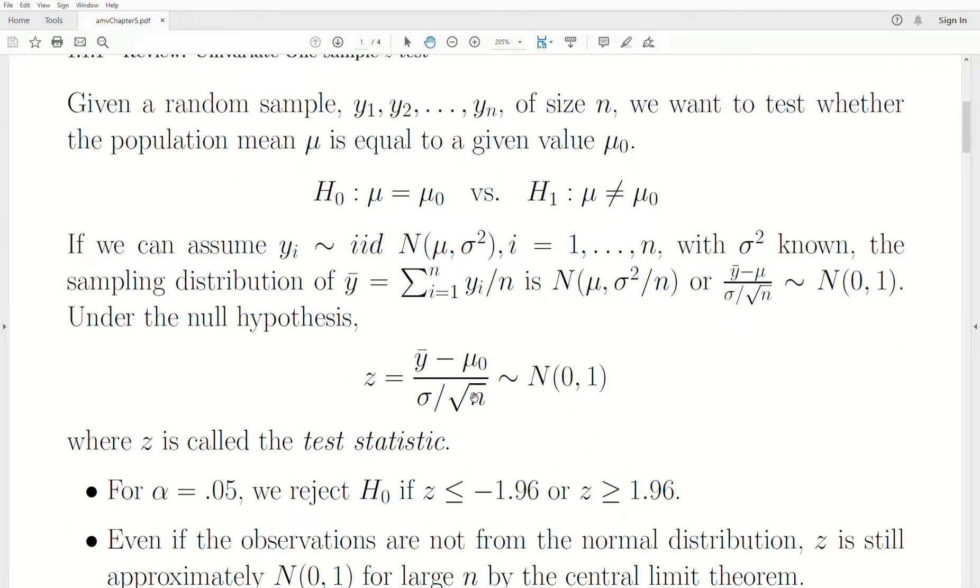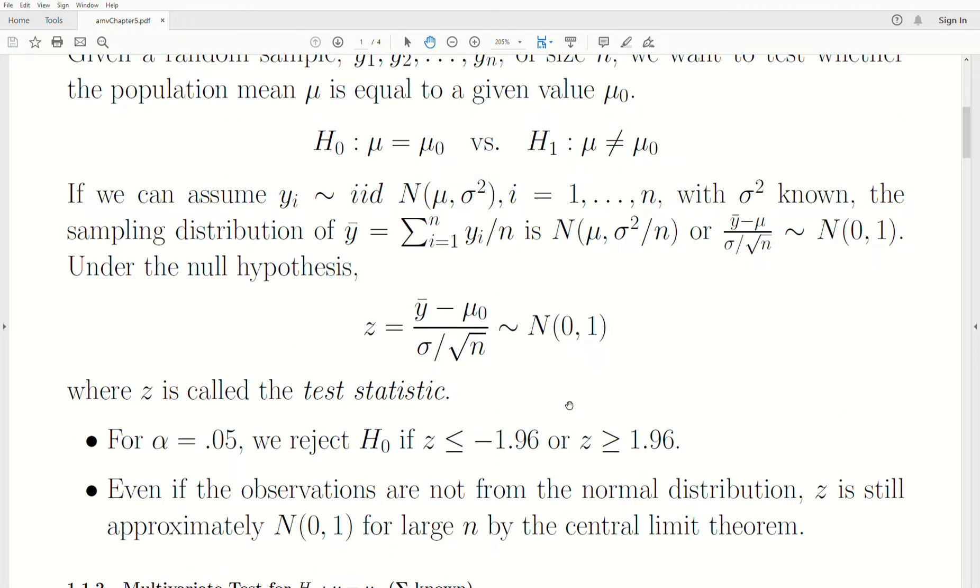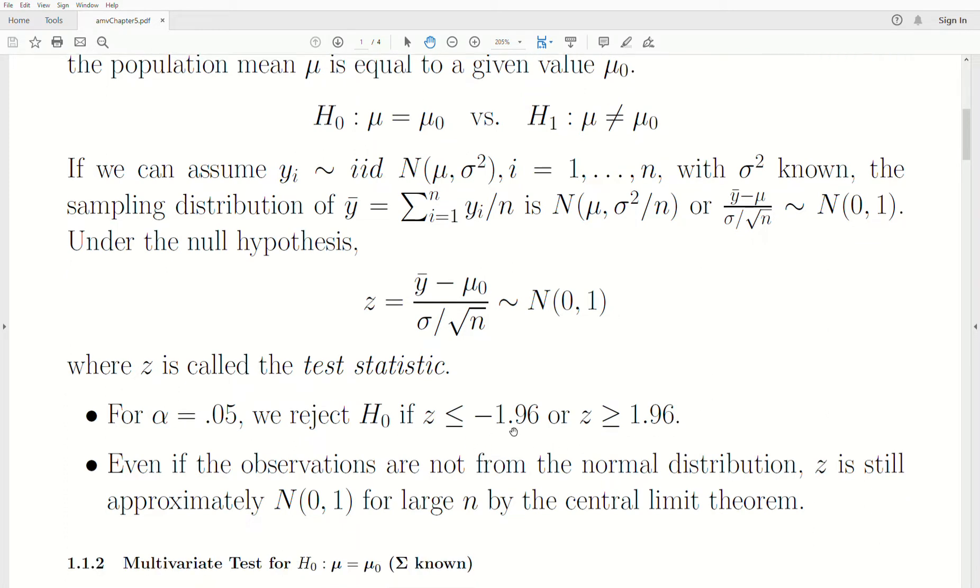So we create a test statistic, and we call it z, and it's a standard normal random variable. And if the value is too big or too small, meaning the sample mean is very far from the hypothesized mean, then we reject. So if we let α be 0.05, we reject if z is less than or equal to -1.96 or greater than 1.96. And that's the test.